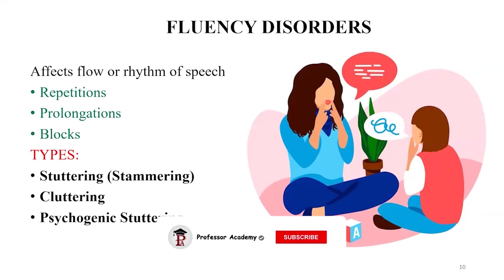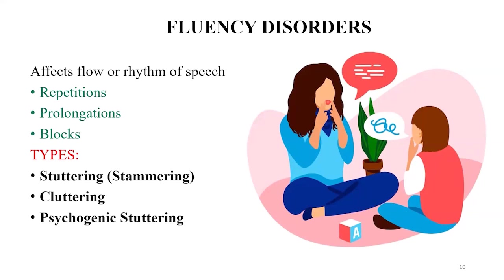Fluency disorder affects the flow or rhythm of speech; the person may repeat words or have prolonged pauses. It has three types: stuttering or stammering — difficulty speaking, repeating syllables like 'ha-ha-happy'; cluttering — excessive use of interjections while speaking; and psychogenic stuttering — the person cannot speak in public places but is comfortable speaking with two or three people. This is also a form of stage fright.